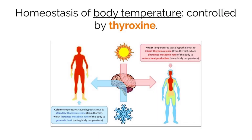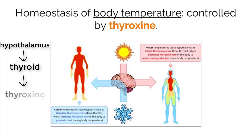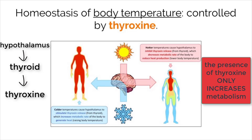Body temperature is regulated by thyroxin. Thyroxin is a hormone secreted by the thyroid gland in response to signals initially derived from the hypothalamus in the brain. This hormone ultimately works to increase metabolism in the body, which produces heat. If the body gets too cold, thyroxin is secreted, which will increase the metabolic rate of the body and generate heat. If the body is too warm, thyroxin is inhibited, which decreases the body's metabolic rate and reduces heat production to cool off.